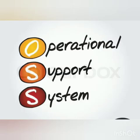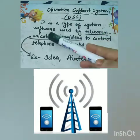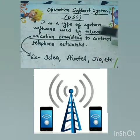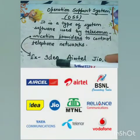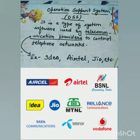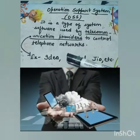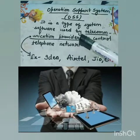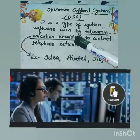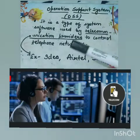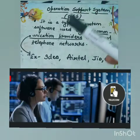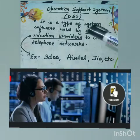Let's discuss what is an Operational Support System. It is a type of system software used by telecommunication providers to control telephone networks. These are the companies which provide you telephone networks, like Idea, Airtel, Jio, and many more. It is a software that enables a service provider to manage, control, or analyze the services on its network. That is why telecommunication companies use this software, so they can keep an eye on their network services.